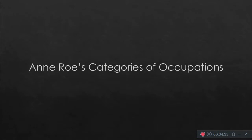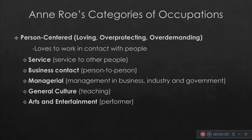Next would be Ann Roe's categories of occupations. First would be person-centered — this could be loving, overprotecting, or overdemanding. These individuals love to work in contact with people; focusing on the child from adolescent stage up to adulthood, they love engaging with people. The first category under person-centered is service — service to other people. Second would be business contact, which is more person-to-person, with face-to-face engagement, like financial advisors.